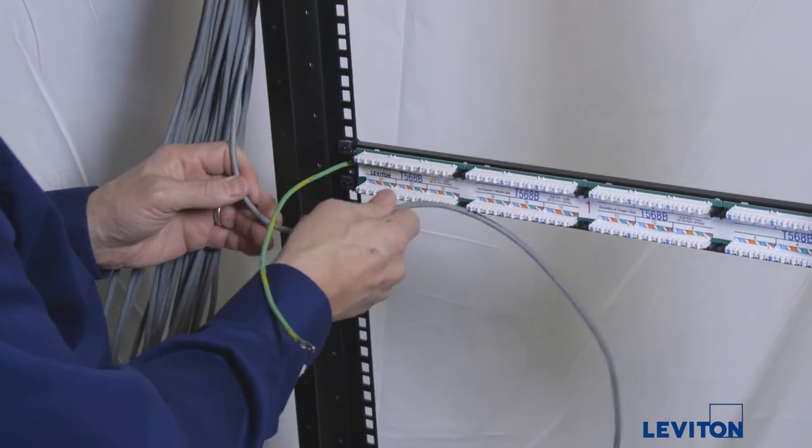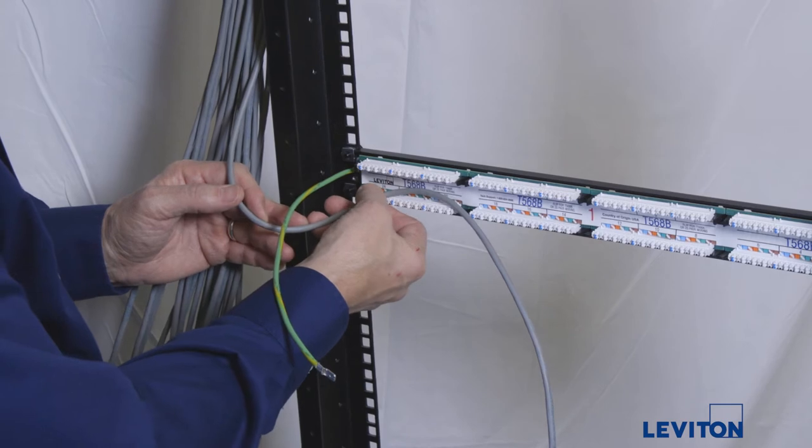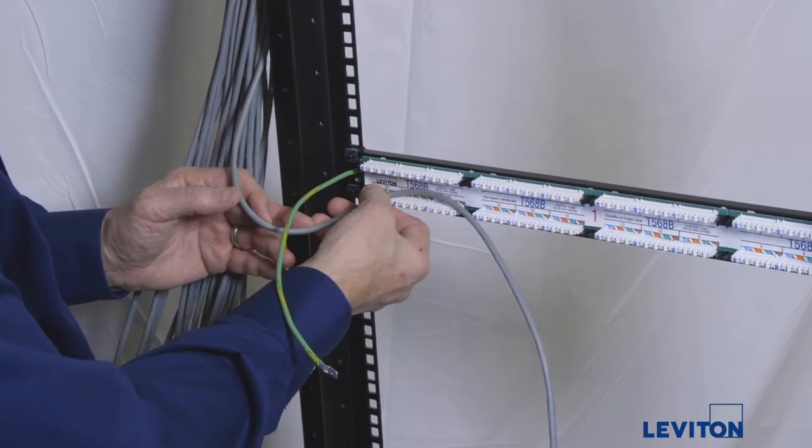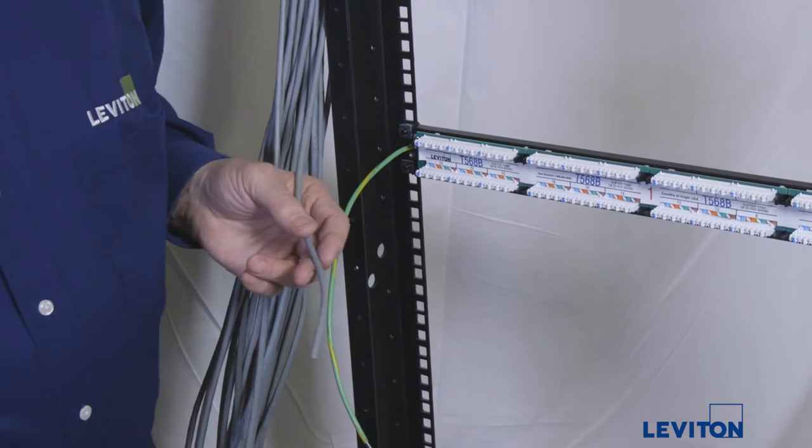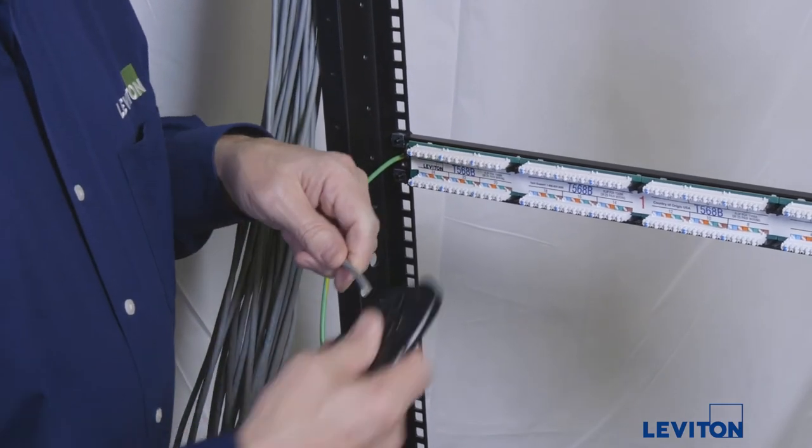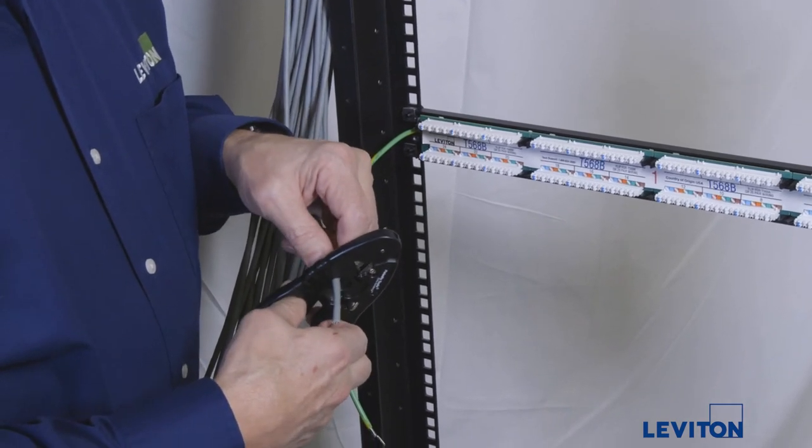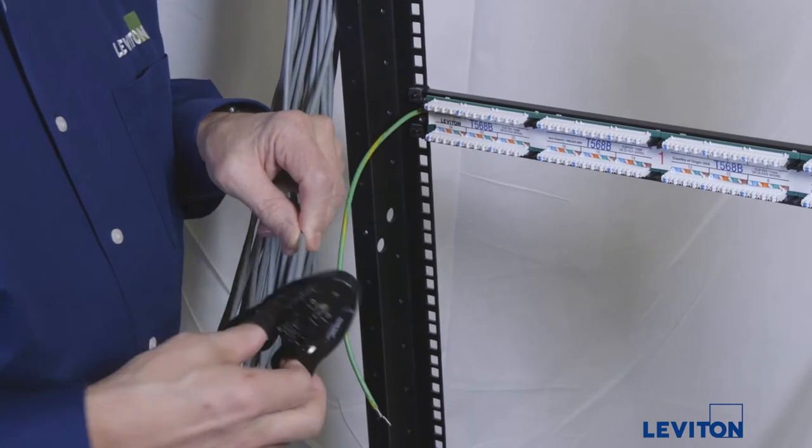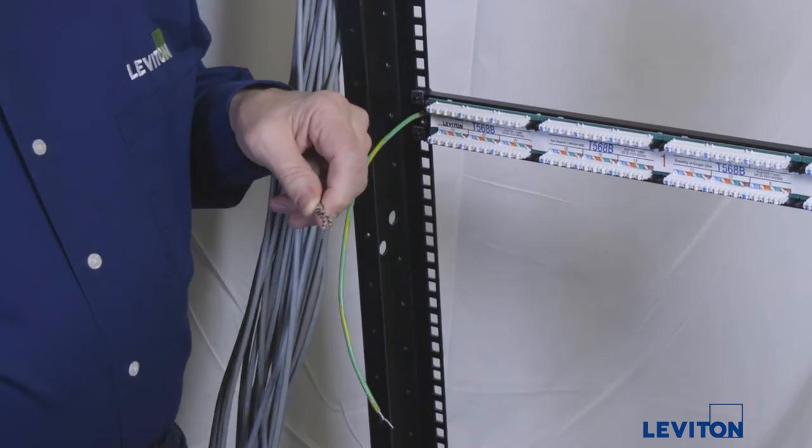Find the cable labeled 24 and measure the length needed to reach from the cable bundle to the patch panel. Mark it with your finger. Take the data wire strip tool and make a cut in the cable using a single circular motion about two inches beyond the point you marked with your finger. Be careful not to nick the conductors. Break the cable jacket and slide it off.